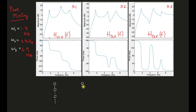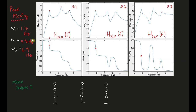We can also figure out what the mode shapes look like from the frequency response function. Because we have a three-story, three-degree-of-freedom system, I draw three structures and overlay the mode shapes. Looking at the phase plots at the first peak, the first, second, and third outputs all have 90-degree phase angles — all in the same direction. This is representative of the first natural mode, and here is what mode one looks like.